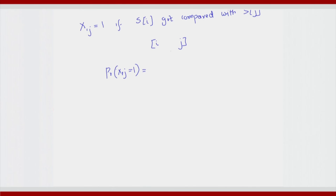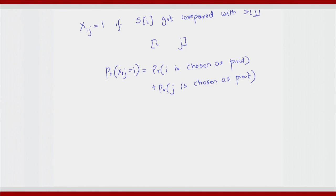Therefore, the probability that x_{ij} equals 1 is the probability that i is chosen as pivot, plus the probability that j is chosen as pivot — where I am choosing from the subarray s[i..j]. What is the probability of having i or j as the pivot? This is basically 1/(j-i+1) plus 1/(j-i+1). These are two mutually exclusive events.